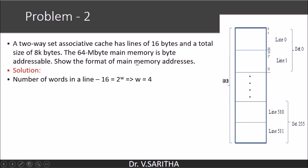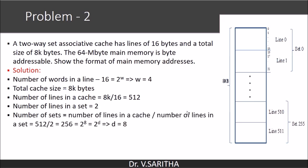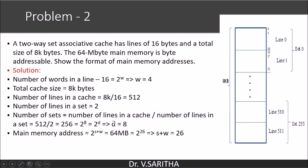Number of bytes in a line is 16, so w = 4. Total cache size is 8KB; number of lines = 8K / 16 = 512. Number of lines per set is 2, so number of sets = 512 / 2 = 256 = 2^8, giving d = 8. Main memory address size is 24 bits (16MB is byte-addressable). Tag = 24 − 8 − 4 = 12 bits. So the format is: tag = 14 bits, set = 8 bits, word = 4 bits.